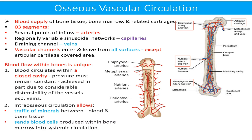Blood flow within the bones is unique in two aspects. Number one, blood circulates within a closed cavity so that pressure remains constant, and this is achieved in part due to considerable dispensability of the vessels, especially veins. Number two, it allows traffic of minerals between blood and bone tissue, and sends blood cells produced within the bone marrow into the systemic circulation.